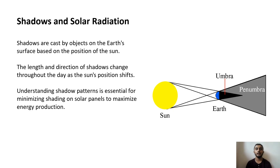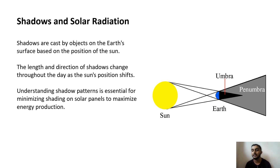Shadows are cast by objects on Earth's surface based on the position of the sun. The length and direction of shadows change throughout the day as the sun's position shifts. Understanding shadow patterns is essential for minimizing shading on solar panels to maximize energy production. Here you can see the shadows and solar radiation diagram.